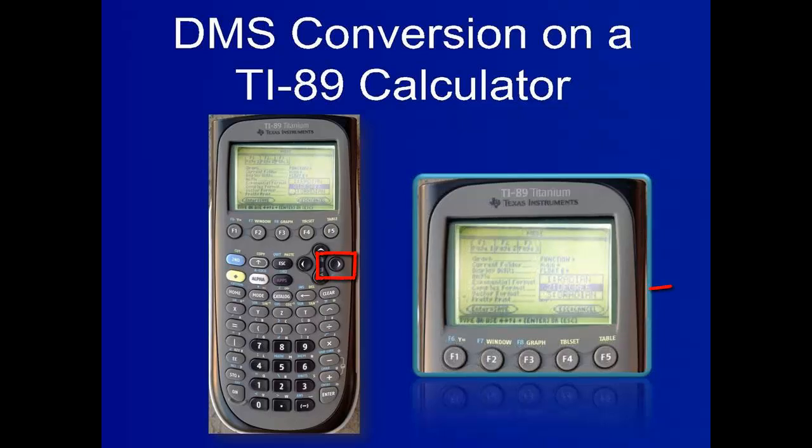Press the right arrow key, then scroll down to the second option labeled degree. Press enter, then enter again to save.